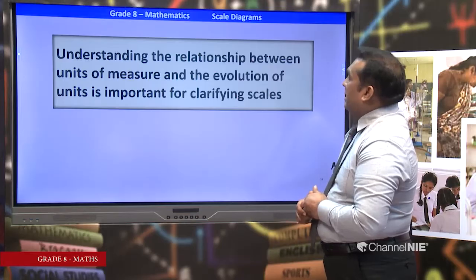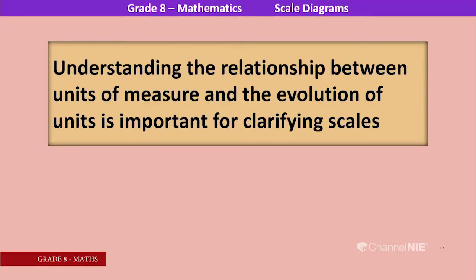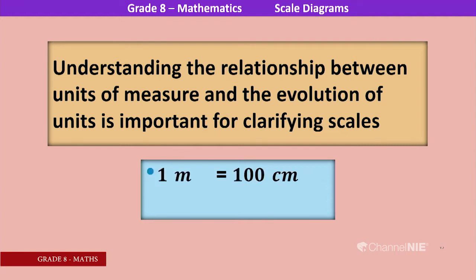Understanding the relationship between units of measure is important for classifying scales. The relationship between units: 1 meter equals 100 centimeters. If you have 1 meter in a scale, you can convert it into 100 centimeters. Also, 1 kilometer equals 1000 meters. If you want to convert kilometers into meters, multiply the given amount by 1000.